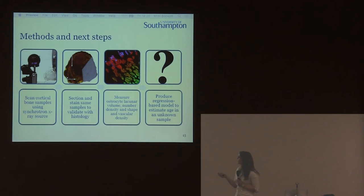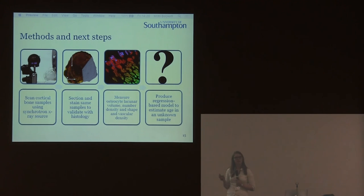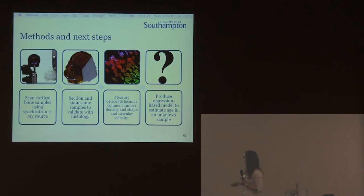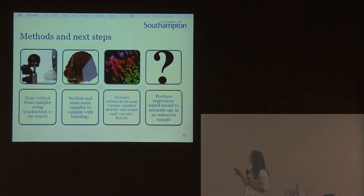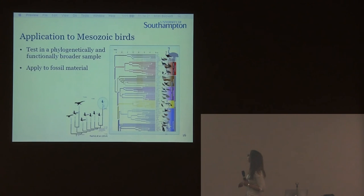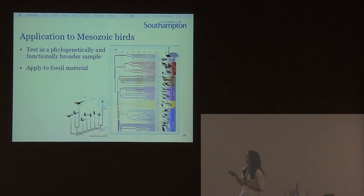Once the images have been obtained, I want to validate my approach using more conventional methods — initially using biomedical thin sections with stains to confirm that the osteocyte lacunae I've found are actually osteocyte lacunae, using stains for nuclei, and similarly for blood vessels, and to compare with current 2D measurement methods. Once confirmed, I'm going to measure osteocyte lacunae volume, number, density, shape, and vasculature, and use those to produce a regression-based model so that I can estimate age in an unknown sample. I'm then aiming to test it with quail, in a phylogenetically and functionally broader sample.